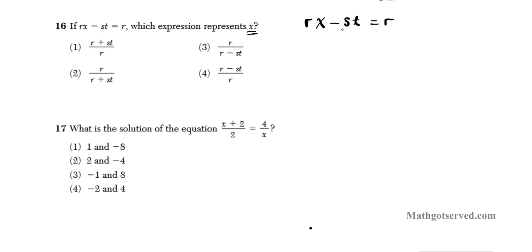So let's go ahead and do that. We're going to get rid of st from the left side and then finally get rid of r, and we'll be left with x. Whatever the value is on the right side of the expression will be the value of x. So let's start out by adding st to both sides — you do the opposite — and you're going to have rx equals r plus st.